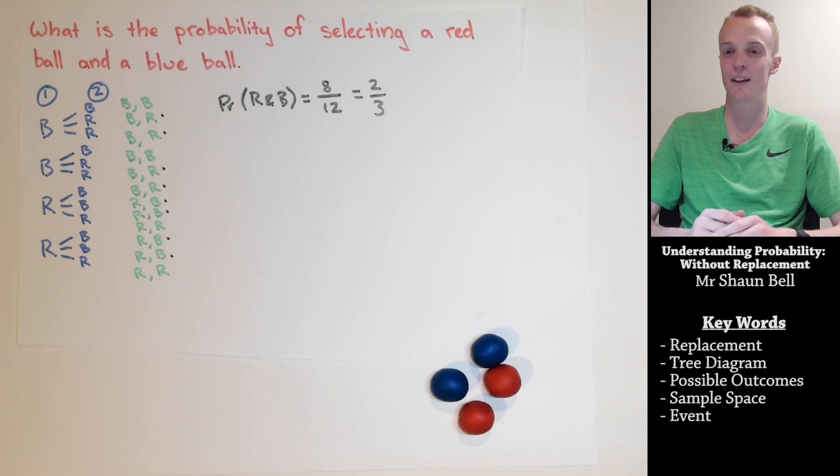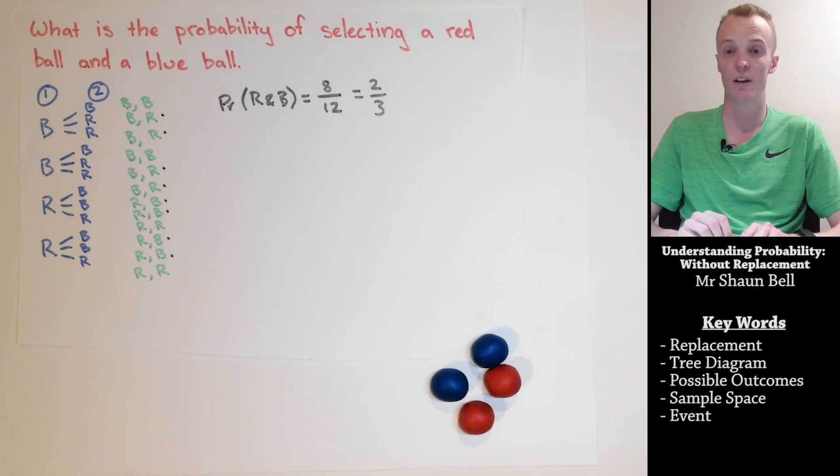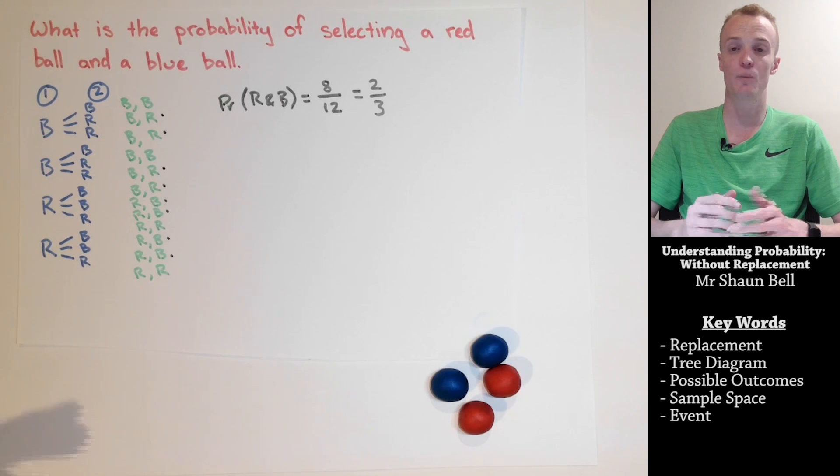Now what's interesting here is we did start with an even number of red and blue balls in the problem. However, when we weren't replacing the selections, the probability of getting 1 red and 1 blue in any order is no longer 50-50 in comparison to when we are replacing the ball.